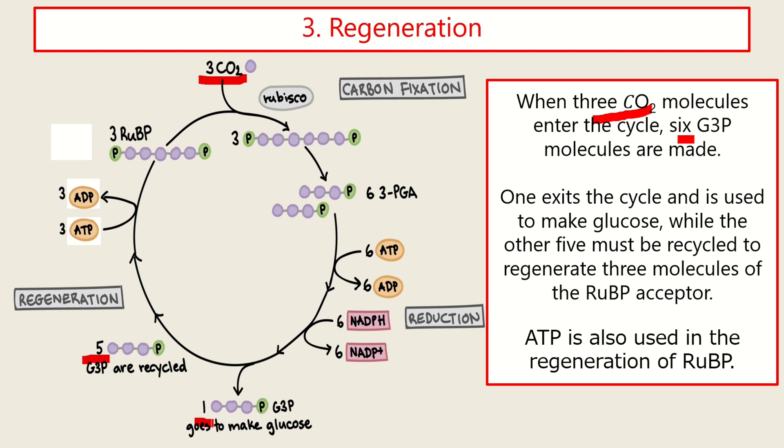So five plus one. However, one G3P exits the cycle. Then it is used to make glucose. And the remaining five molecules are needed to create RUBP molecules.